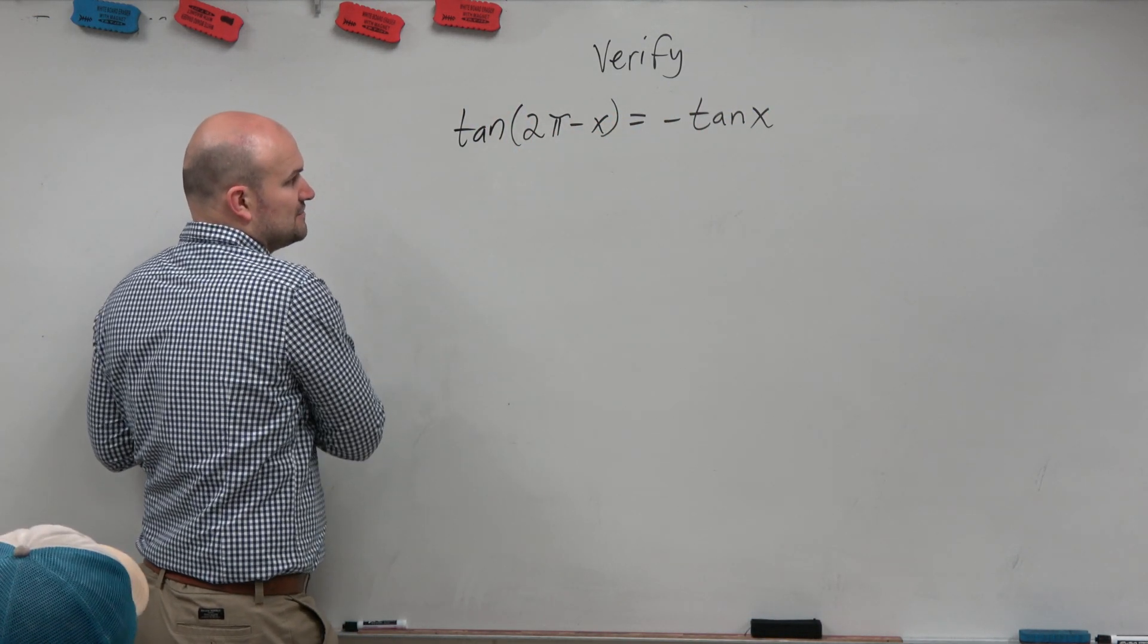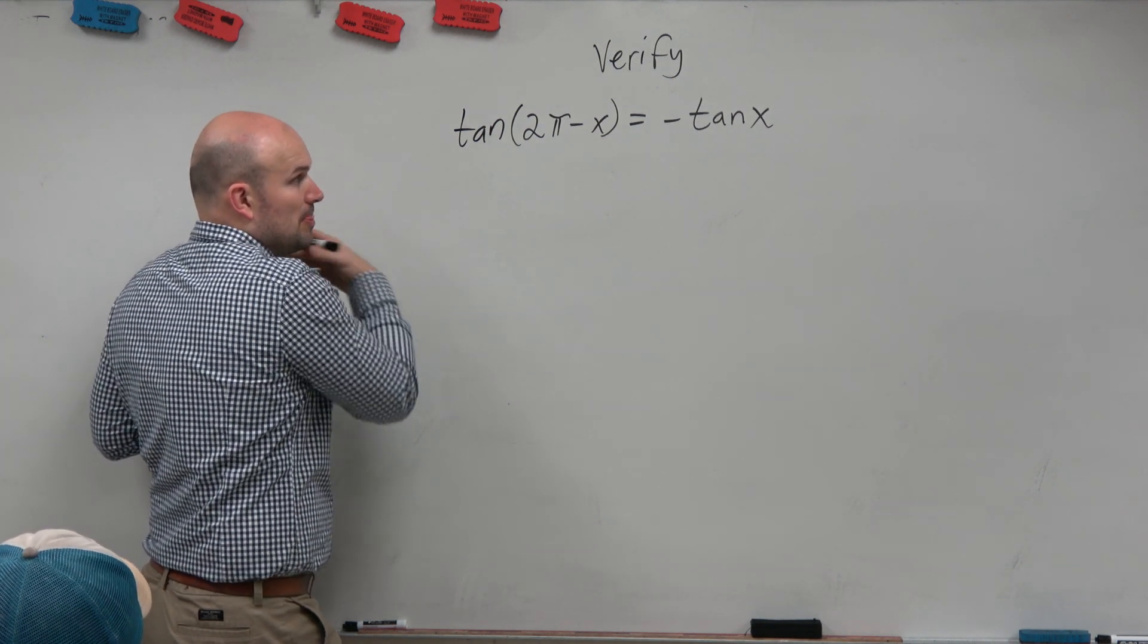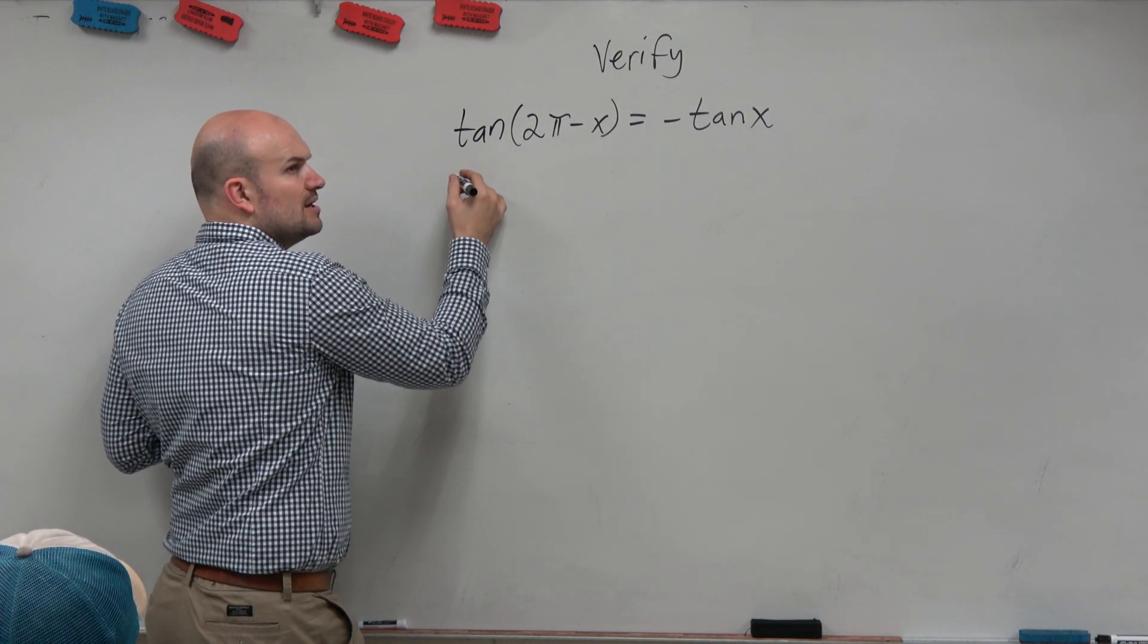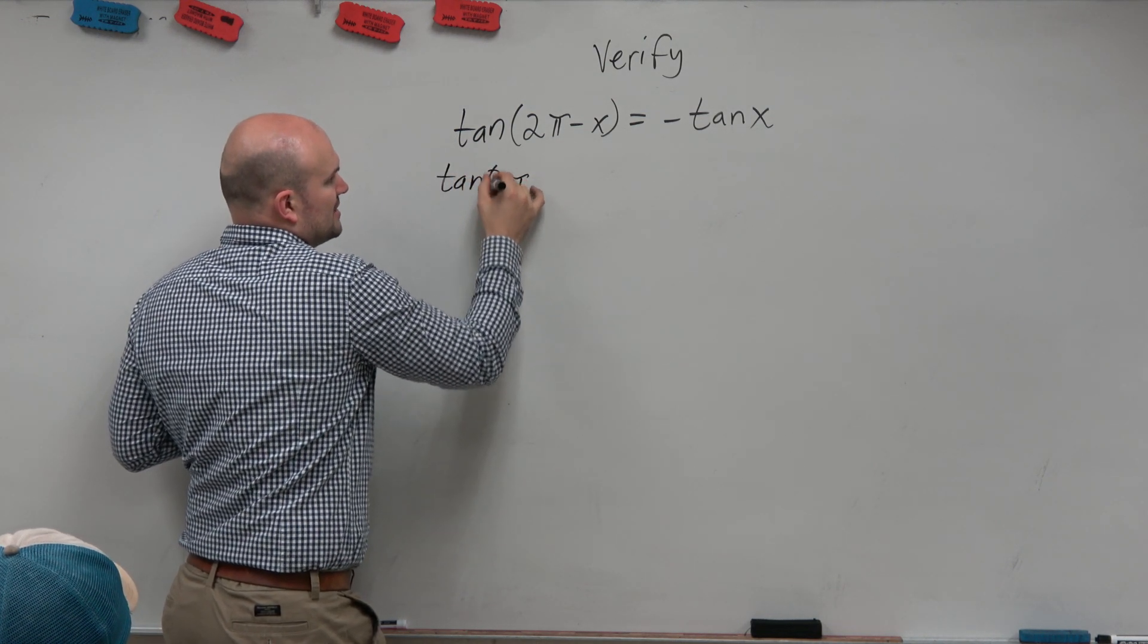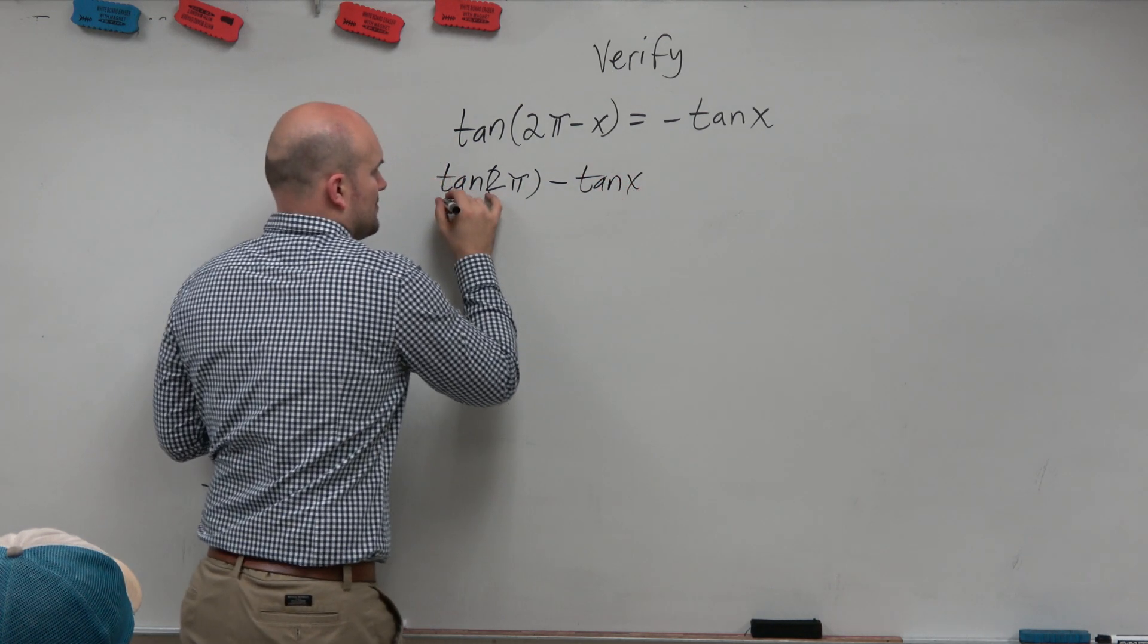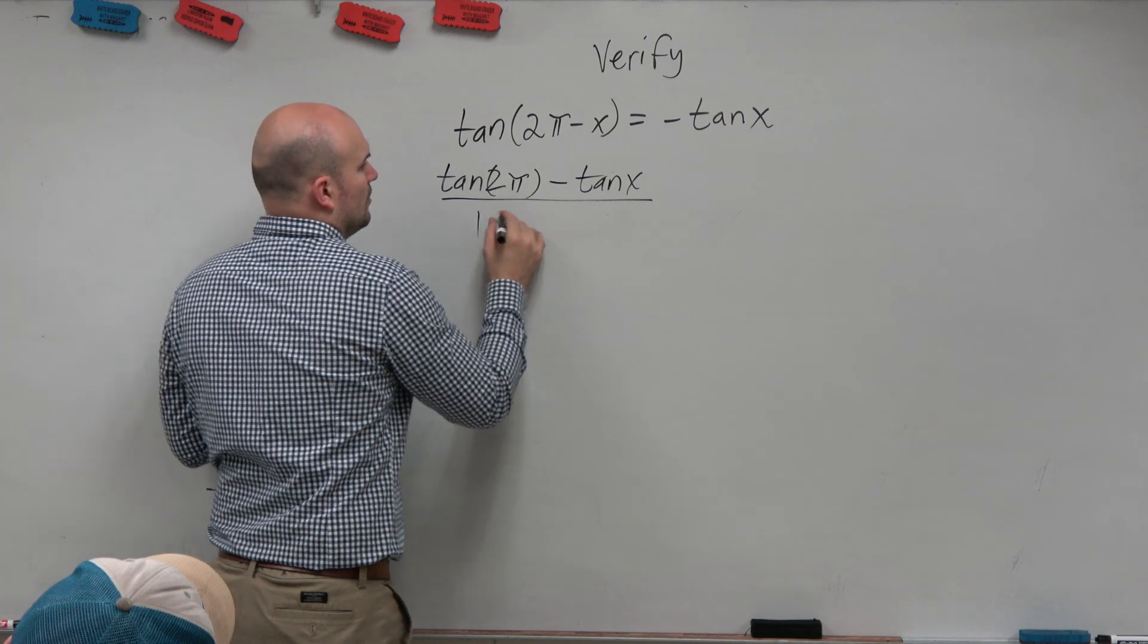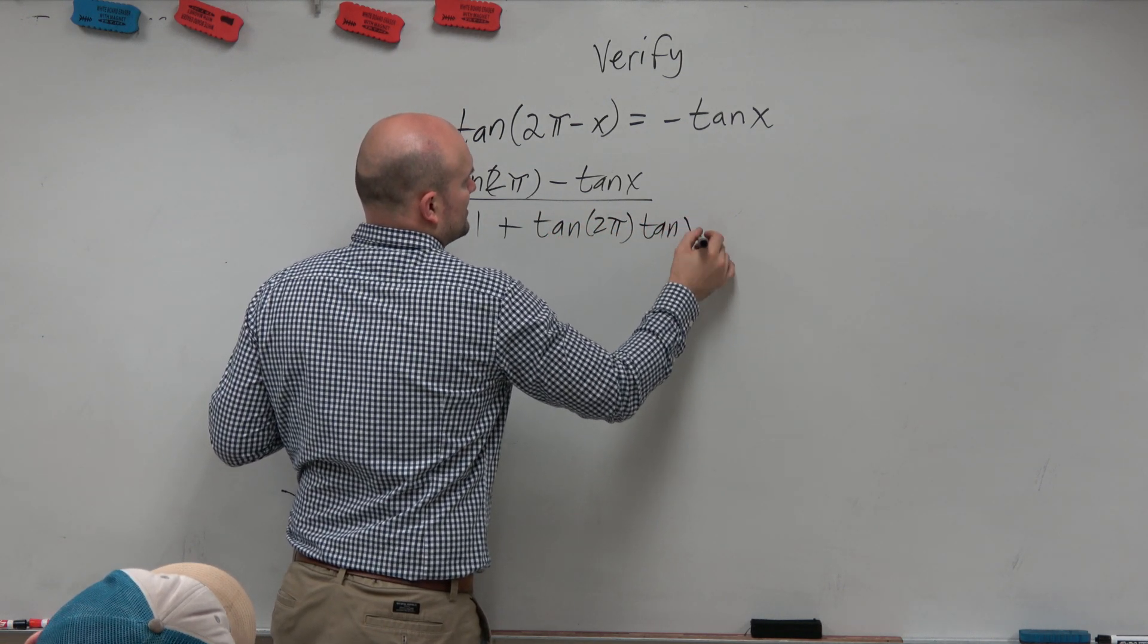So here I have the tangent of 2π minus x equals negative tangent of x. So let's just do the formula. So we're going to have tangent of 2π, or 2π, sorry, minus tangent of x all over 1 plus tangent of 2π times tangent of x.